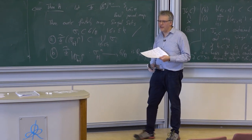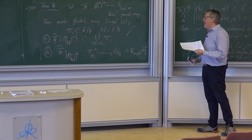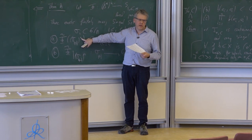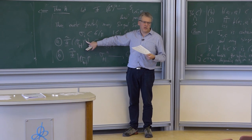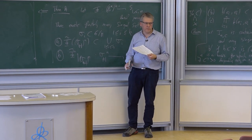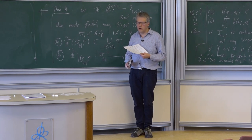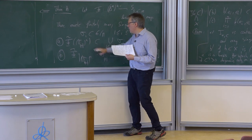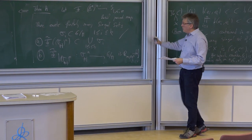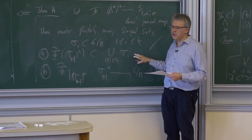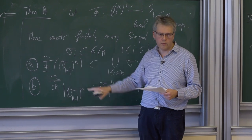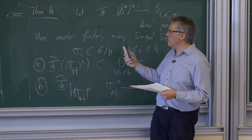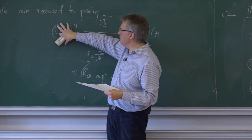For N=1, the statement follows from Schmid's paper. Part B is classical and is implied by Schmid's nilpotent orbit theorem. Part A for N > 1 is what is difficult. We know the monodromy T₁, …, T_N ∈ G(ℤ) are unipotent, so we can write each T_i = exp(N_i) where N_i is nilpotent in the Lie algebra. Because the fundamental group is commutative, the N_i commute.